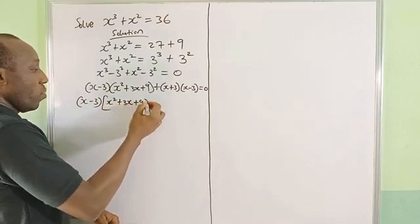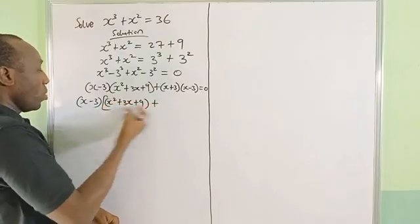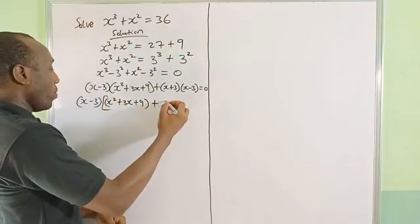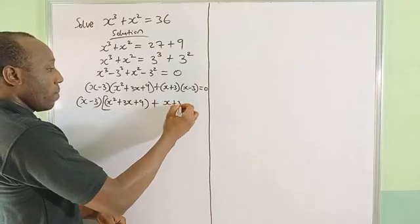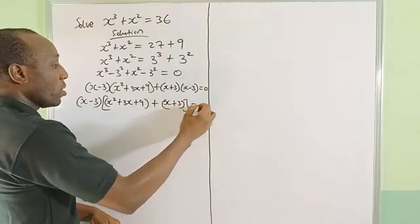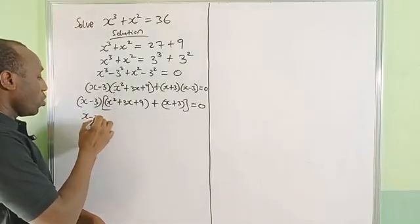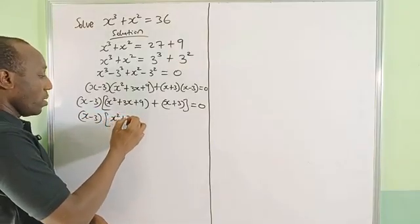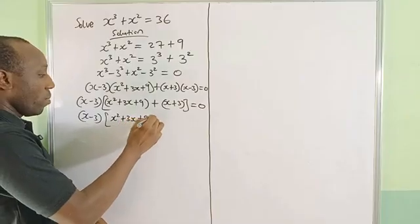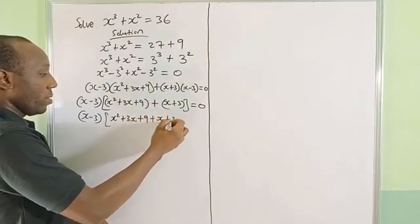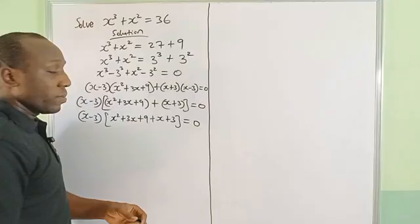You can wrap it in a bracket, then plus (x - 3)(x + 3), and this is equal to 0. So let's simplify what we have in this big bracket: x² + 3x + 9 + x + 3 = 0.